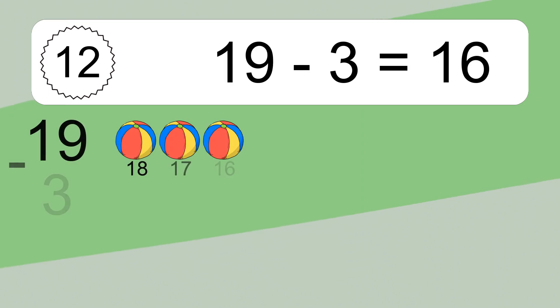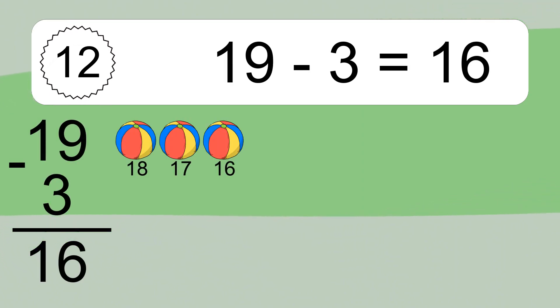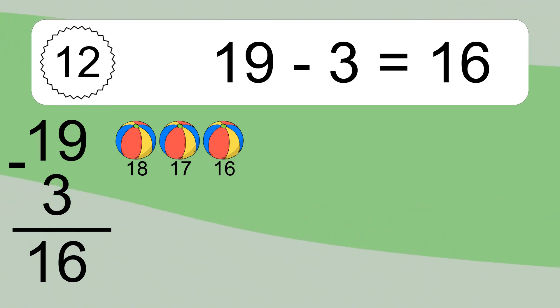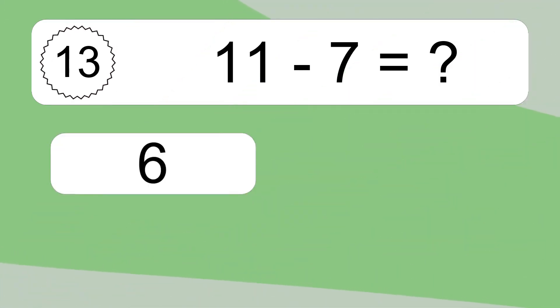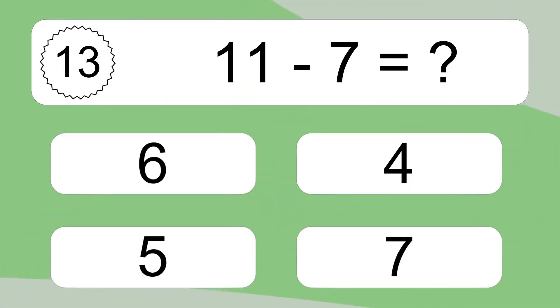19 minus 3 equals what? 19 minus 3 equals 16. Let's count it: 18, 17, 16.